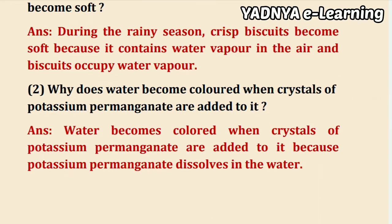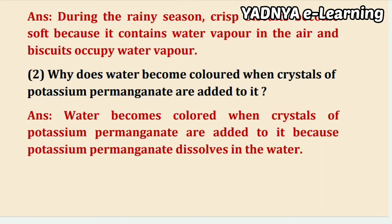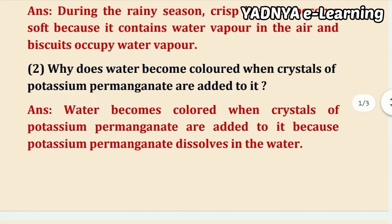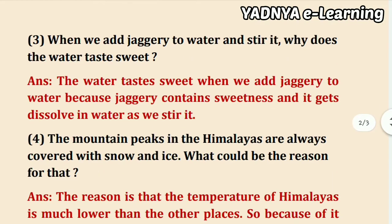Why does water become colored when crystals of potassium permanganate are added to it? The answer is: water becomes colored when crystals of potassium permanganate are added because potassium permanganate dissolves in water.